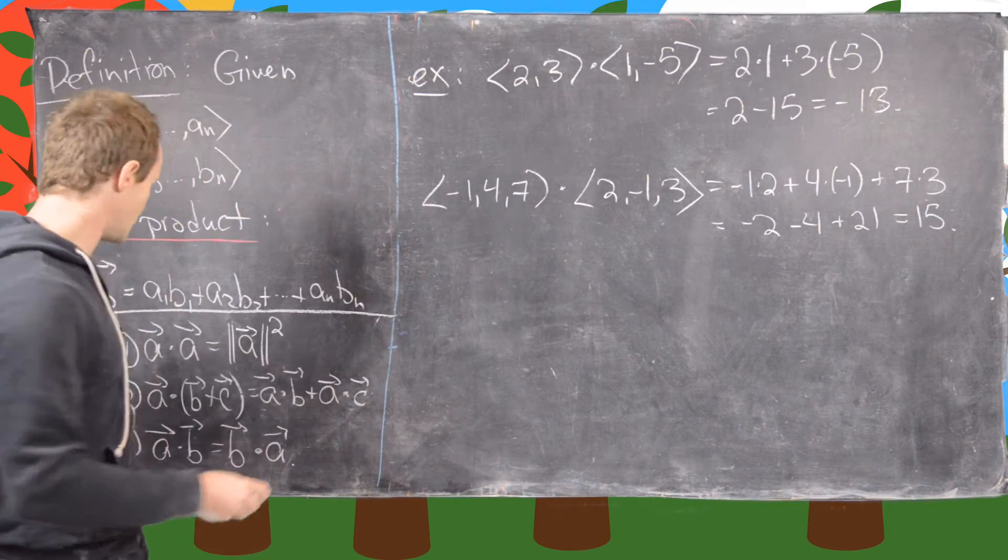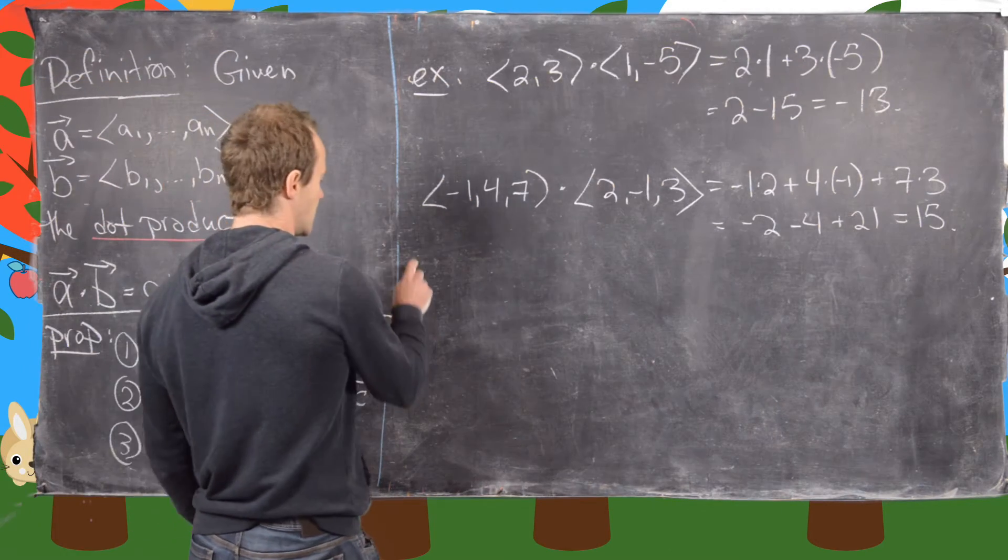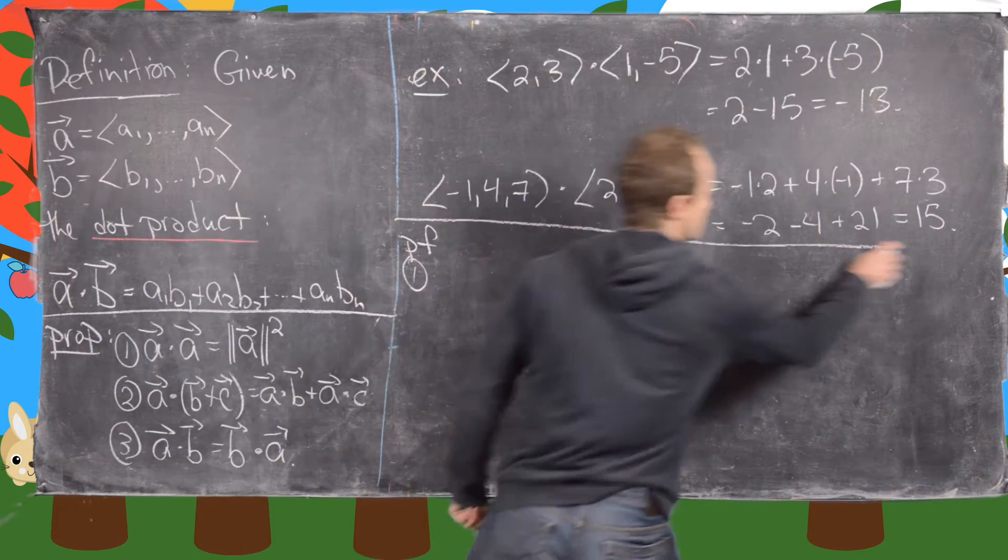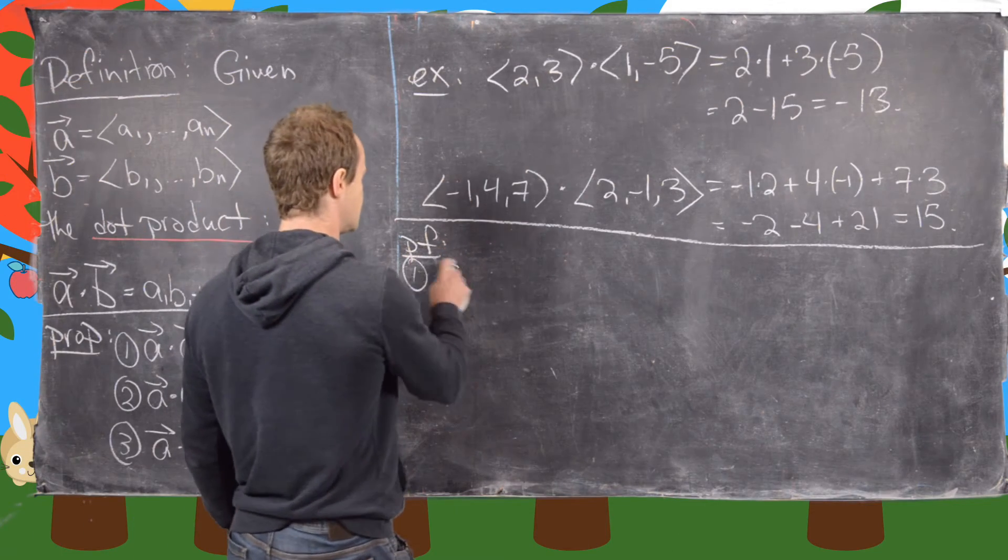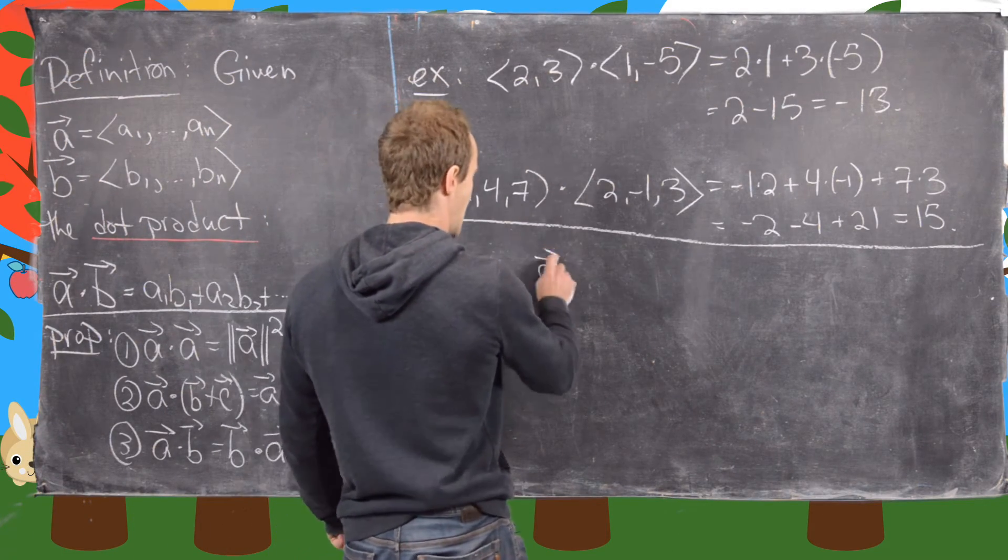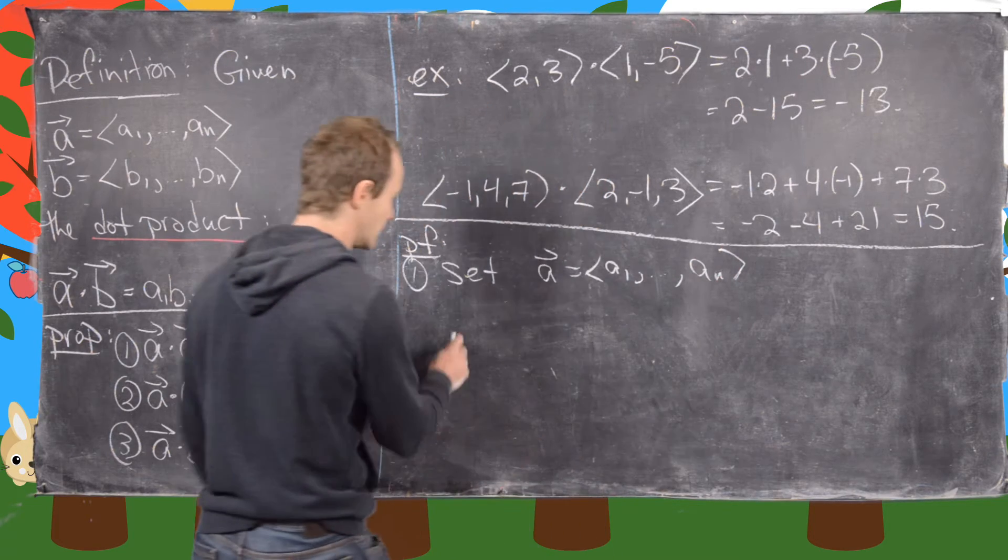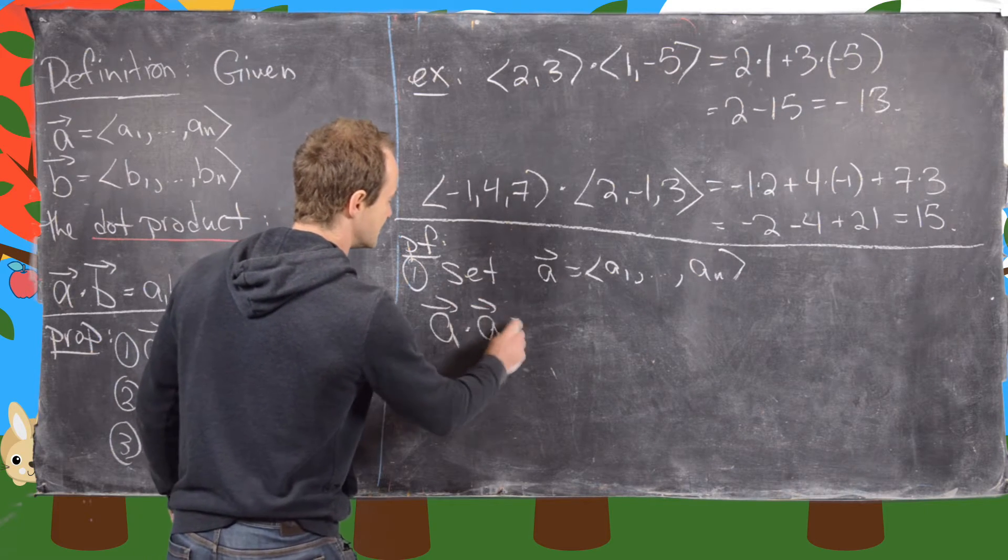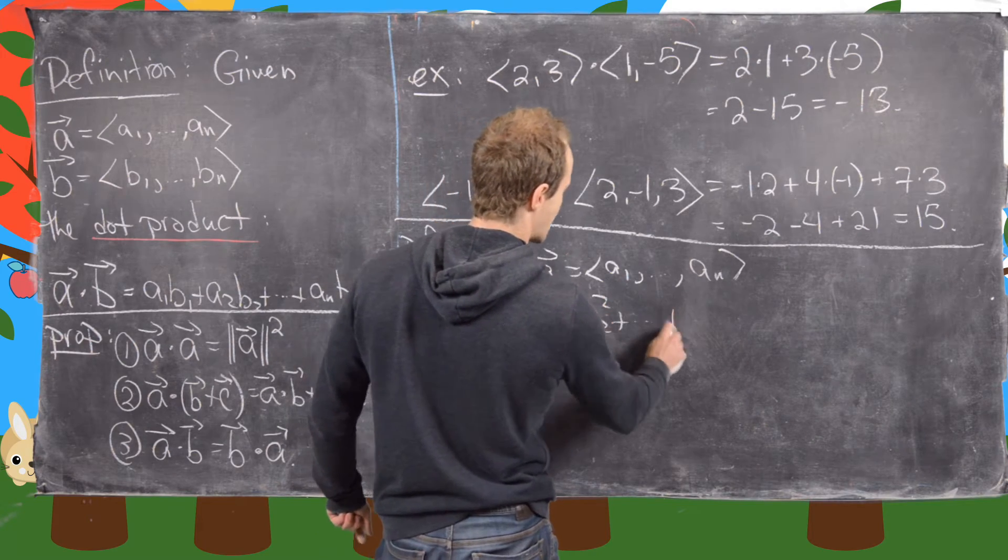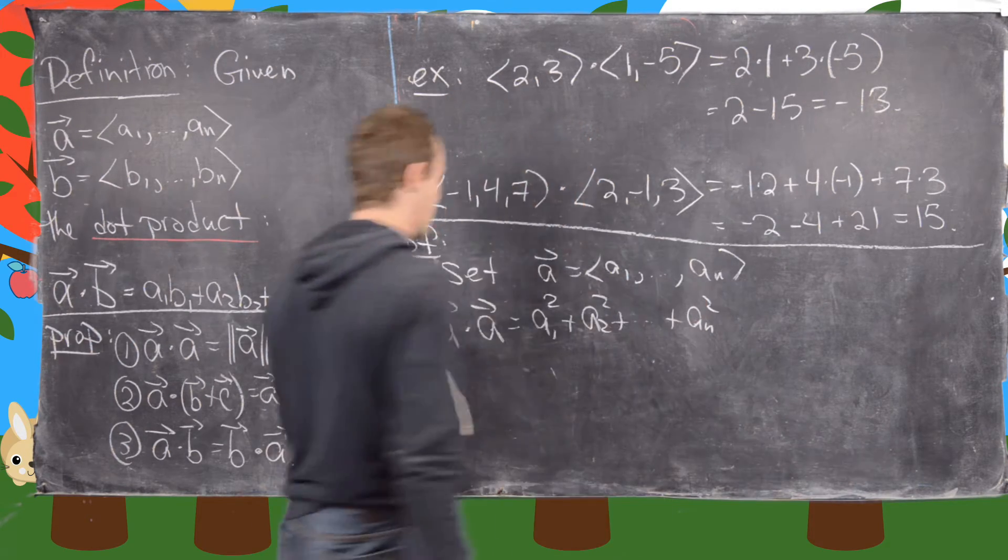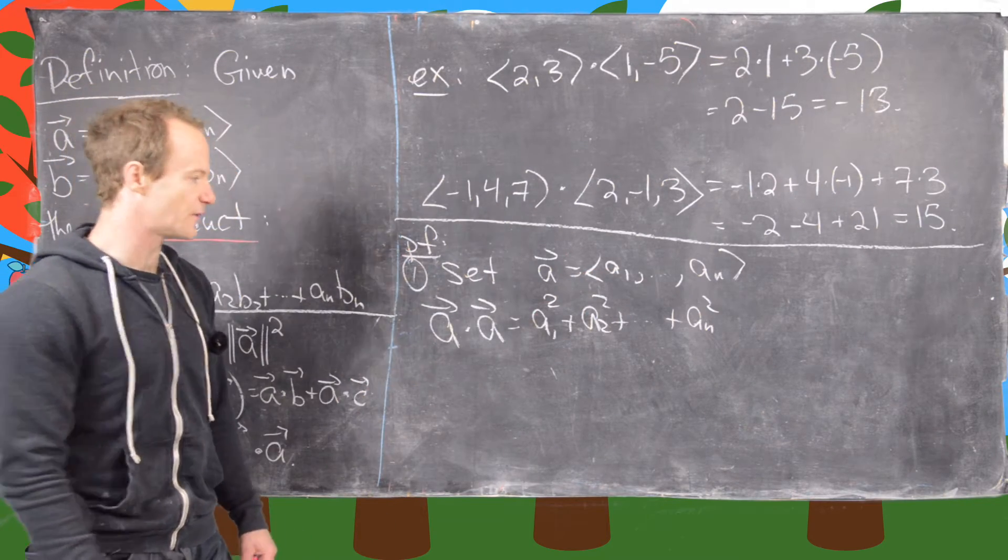Now the next thing we maybe want to do is prove one of these. So let's prove one here, because this is maybe the most useful. And so what we'll do first is set A equal to our vector A1 to AN. And notice that's going to make A dot A equal to A1 squared plus A2 squared all the way up to AN squared, because what we do is we multiply the first component of A with itself and so on and so forth.